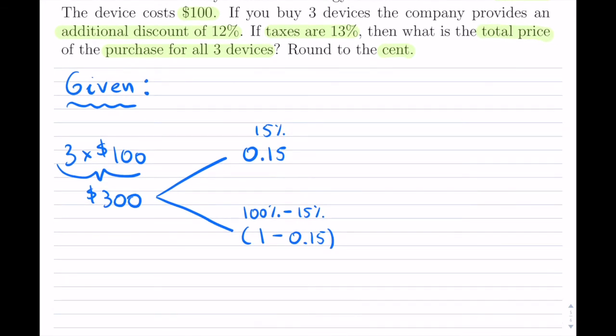But they say, if I'm buying three, I actually get an additional discount. So we're not going to be adding it to the 15%. Instead, we branch off and say, after we apply a 15% discount, we got an additional discount of 12%.